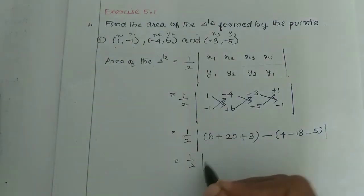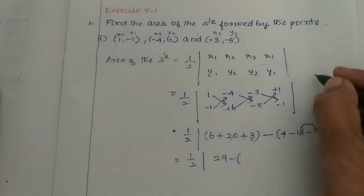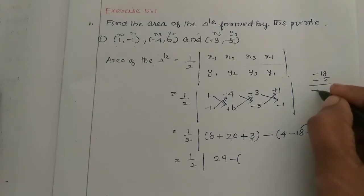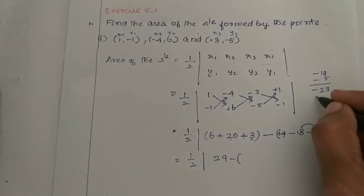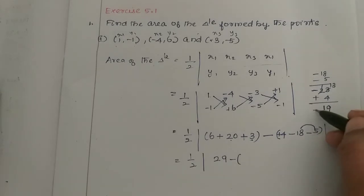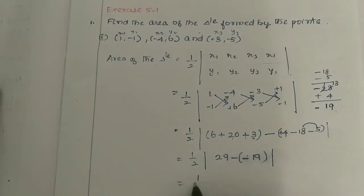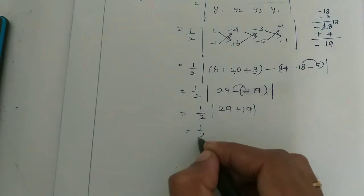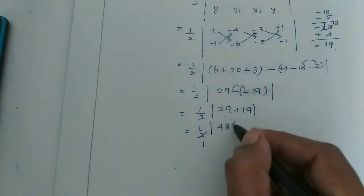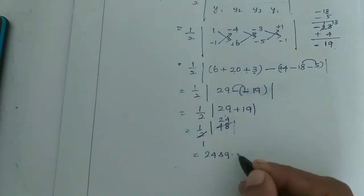So, half into: 6 plus 20 plus 3 is 29. Minus — these two numbers are minus numbers — minus 18 minus 5. The bigger number symbol is minus. Add 23. So 13 minus 4 is 9. This gives minus 19. Which is equal to half into 29 — minus into minus plus 19. So, 29 plus 19 is 48. Half of 48 is 24. Which is equal to 24 square units.